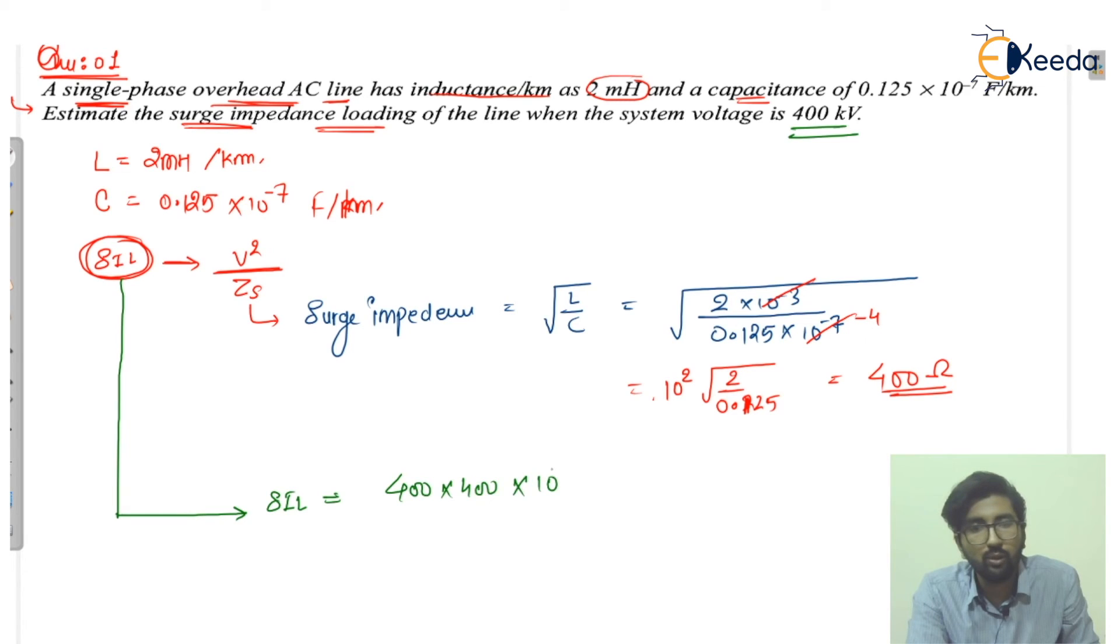V squared is given, so 10 raised to power kilo, so 10 raised to power 3 to power 2, and divided by 400. So cancelling 400 by 400, you are getting 400 megawatt. So I hope this numerical you have understood successfully. Thank you.